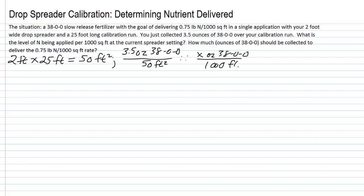Let's proportion that to some unknown X ounces of 38-0-0 per thousand square feet. That would be one of the answers that we are looking for. Our units match up: ounces of 38-0-0 on the top, square feet on the bottom. So this is a fair proportion. We cross multiply, divide, and solve for X. We get 3.5 times 1000 equals 50 times X. We perform our multiplication of 3.5 times a thousand, that's 3500 equals 50 times X.